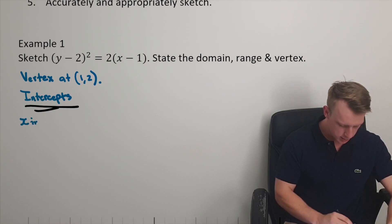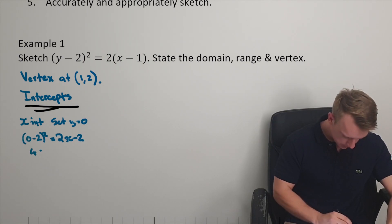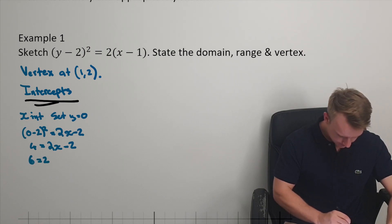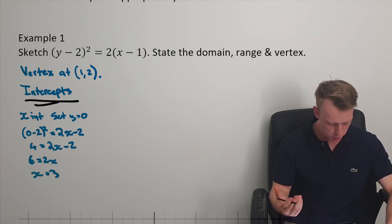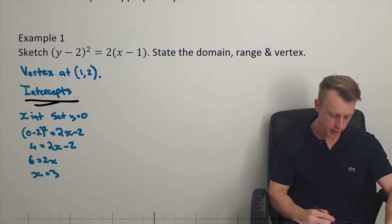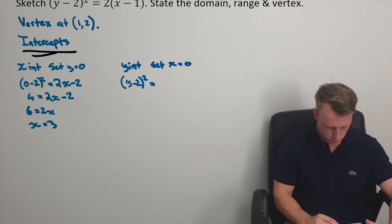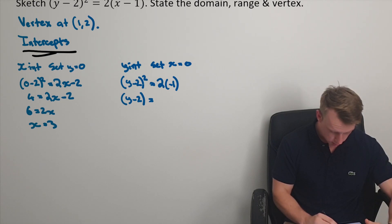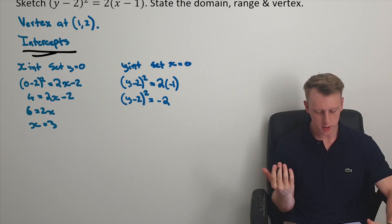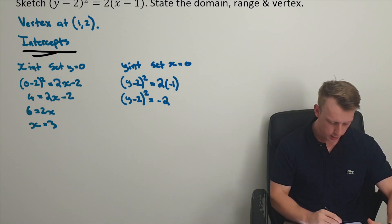x-intercept, set y equals 0. So we get an x-intercept of x equals 3, and do a similar thing. y-intercept, set x equals 0. That's y minus 2 squared equals negative 2. And then we ask, well, does this have any solutions? Can we solve it?